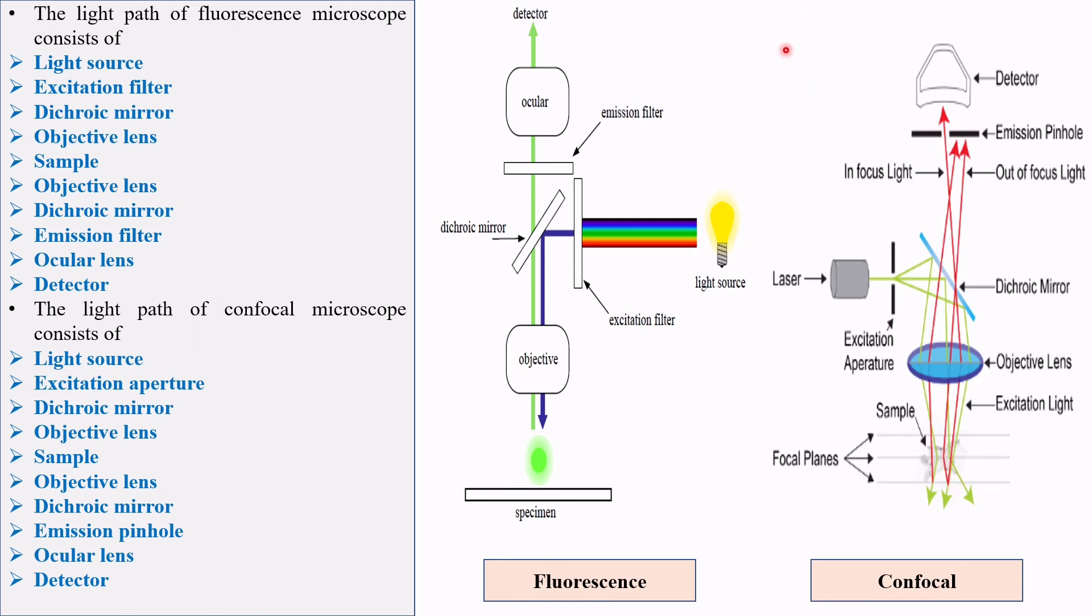Specimen contains fluorophore which is now getting excited by this light. You can ask me why we are using objective lens before specimen. The answer is here we are not using any condenser. To focus the light in specimen we are using objective lens before it.